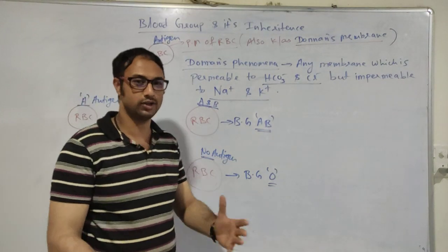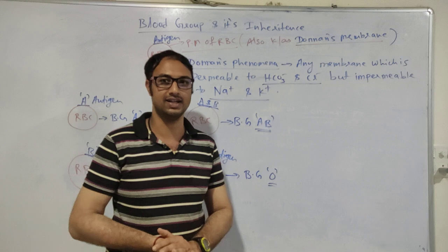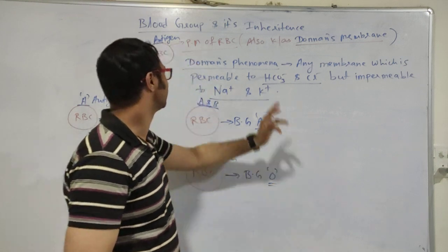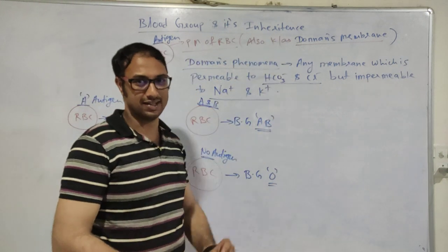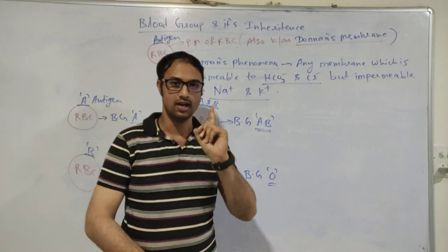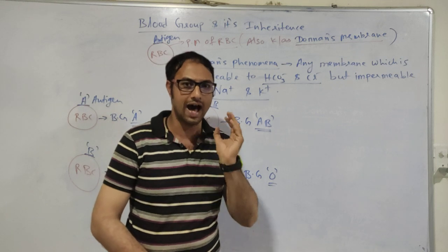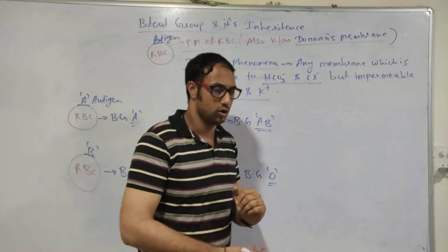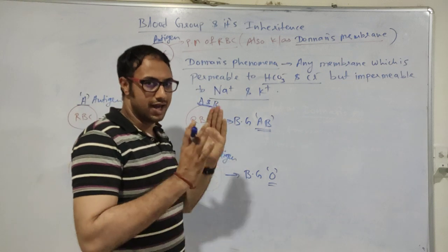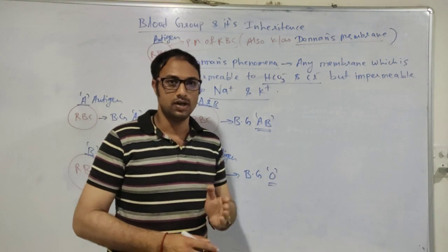Today we are going to talk about how to determine the blood group of a person. There are two types of blood group systems: first is the ABO system of blood group, and the second one is the Rh system of blood group. Now, in the ABO system of blood group, the blood group is determined based on the type of antigen present on the plasma membrane of RBC.